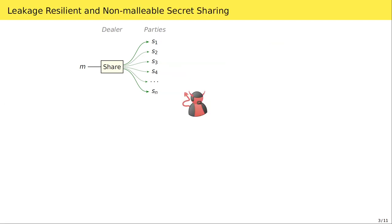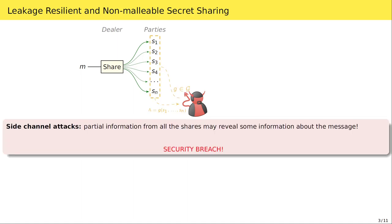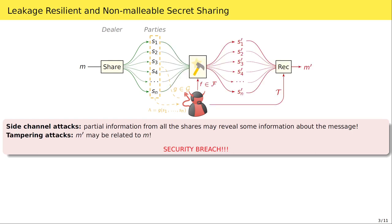Even if a secret sharing scheme is secure in the sense of the privacy definition, an attacker could try to obtain information about the secret in other subtle ways. For example, the attacker could leak some information from possibly all the shares, or could manipulate the shares and observe the result of this manipulation on the reconstructed message. Since these kinds of attacks are quite powerful, recent trends in cryptography initiated the study of proper countermeasures.